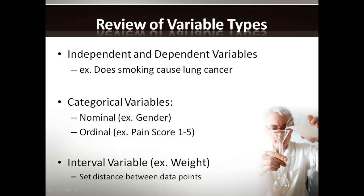Another organizing system for variable types is based on the type of data we collect. There are categorical variables and interval variables. This distinction is made on whether we know the distance between data points. In an interval variable — for example, weight — there is a set distance between any given point that we understand and know. In a categorical variable, there is no known set distance between data points.